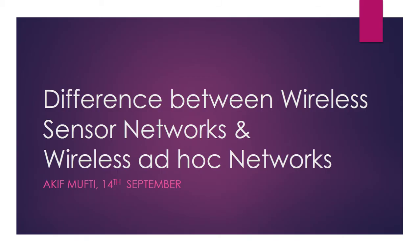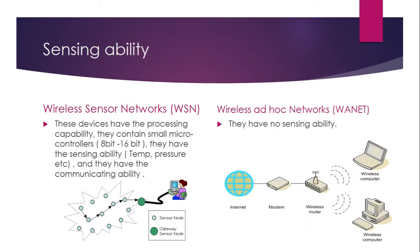Hello everyone, I'm Mark, and we're making a video on the difference between wireless sensor networks and wireless ad-hoc networks. When you discuss wireless sensor networks, they have three important key components. The first is the sensing component, which senses parameters like temperature, pressure, and chemical composition.